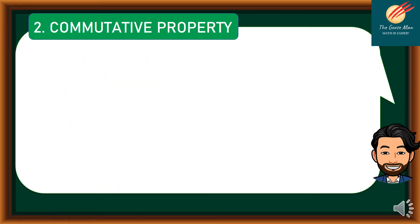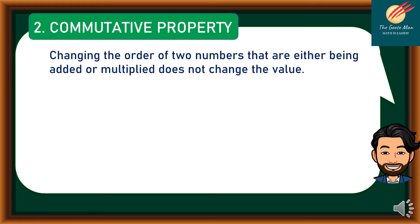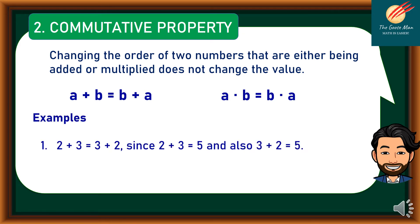The commutative property says that changing the order of two numbers that are either being added or multiplied does not change the value. In symbols, a plus b equals b plus a, or a times b equals b times a. For example, 2 plus 3 equals 3 plus 2, which is equal to 5.